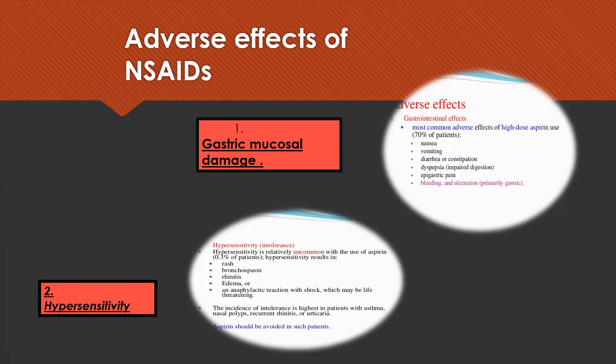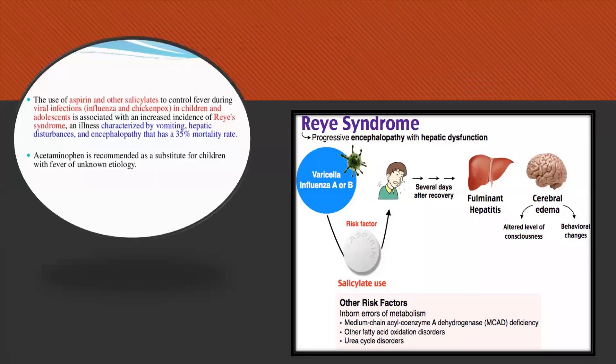The second adverse effect is hypersensitivity, which is relatively uncommon and manifests as rash, bronchospasm, rhinitis, edema, or an anaphylactic reaction with shock, which may be life-threatening. The incidence of intolerance is highest in patients with asthma, nasal polyps, recurrent rhinitis, or urticaria — aspirin use should be avoided in such patients. Another adverse effect with aspirin is Reye's syndrome; aspirin use to control fever during viral infections in children is associated with an increased incidence of Reye's syndrome, which is progressive encephalopathy with hepatic dysfunction. However, acetaminophen or paracetamol is recommended as a substitute for children with fever of unknown etiology.